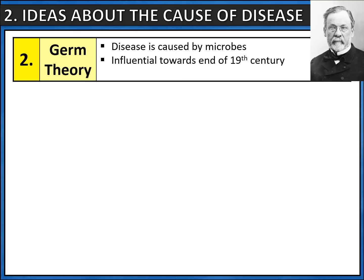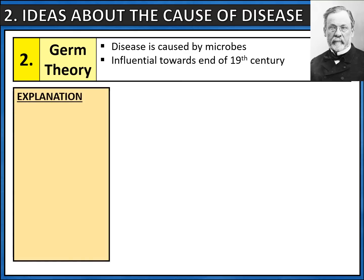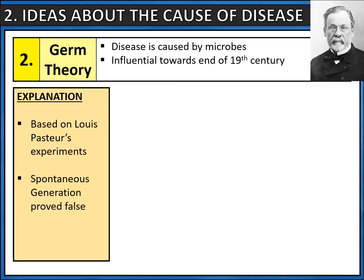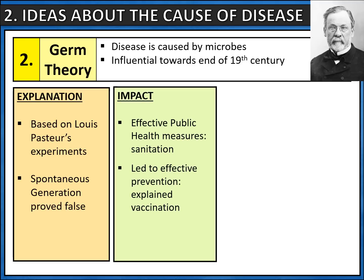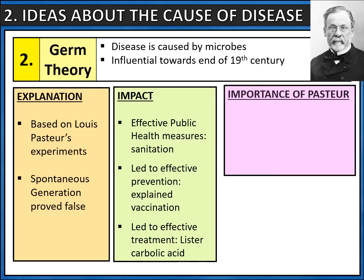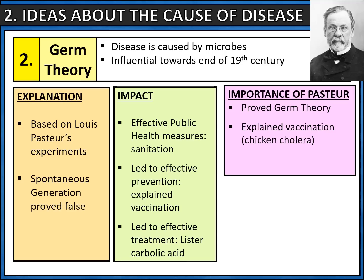Let's look at germ theory in a little more detail. The key idea is that disease is caused by microbes. Louis Pasteur is our key individual here — this proved that previous ideas of spontaneous generation were false. The impact of germ theory is really important: it means that public health measures started to be effective, with an increased focus on sanitation, and with ideas around the cause of disease it led to effective prevention. Louis Pasteur managed to explain how vaccination worked, and that led to further developments through into the 20th century. Pasteur's personal importance is really key: he proved that his theory worked, found a way to explain vaccinations, and thirdly created his own vaccinations, for example with rabies.